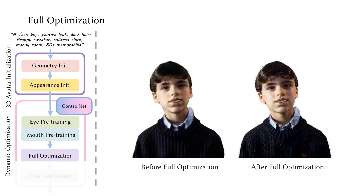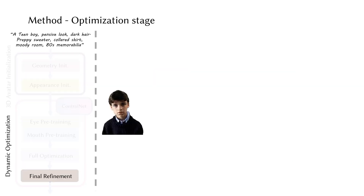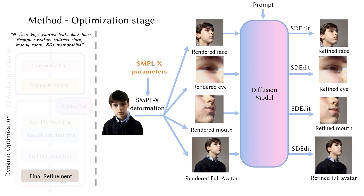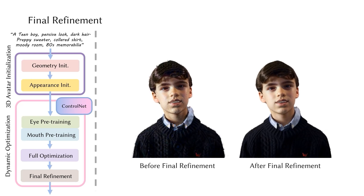After full optimization, additional details are added to the avatar, but unrealistic artifacts remain. Following the ISM-based optimization, we introduce a final refinement process to further enhance quality. We render the different regions of the avatar and use SDEdit to generate refined images using the pre-trained diffusion model, then optimize the avatar against the refined images. After the refinement process, we achieve our final avatar with a highly realistic appearance and robust animation capabilities.